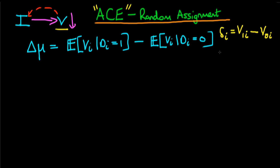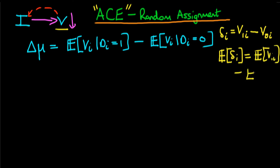What we were really interested in figuring out was the average level of delta I — the average causal effect. That's just the expectation of V1I minus the expectation of V0I. This is the thing which we are actually looking to derive, and we called that the average causal effect.